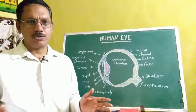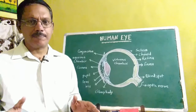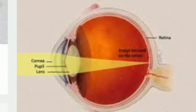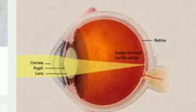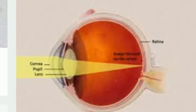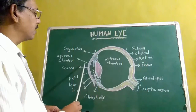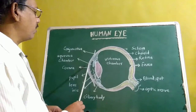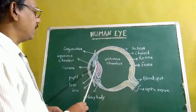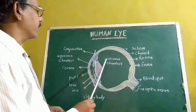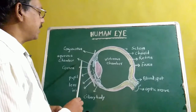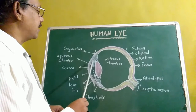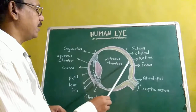The human eye has two functional parts: the focusing part and the receptor part. The focusing part consists of the conjunctiva, cornea, aqueous humor, lens, and vitreous humor. The light rays which pass through it are affected by them, and it focuses on the retina.